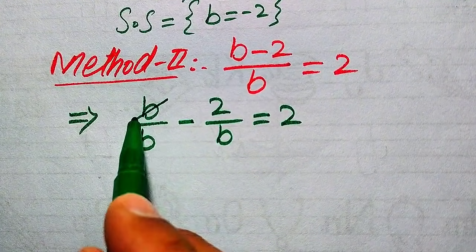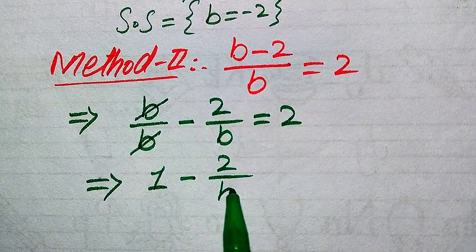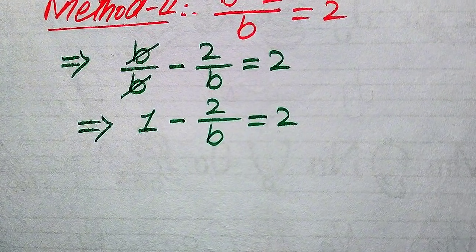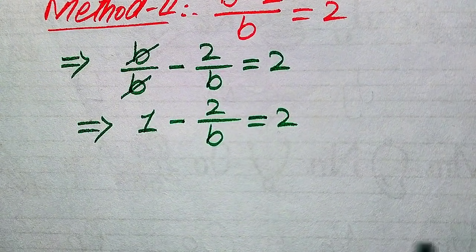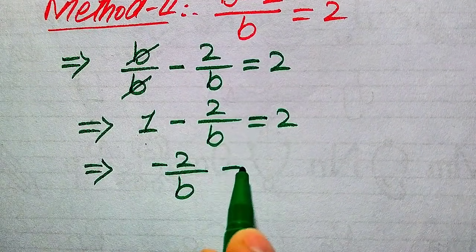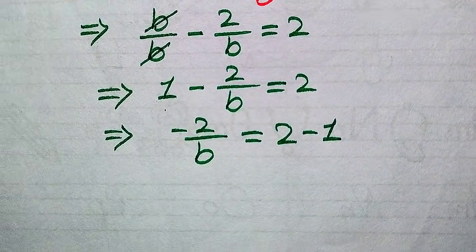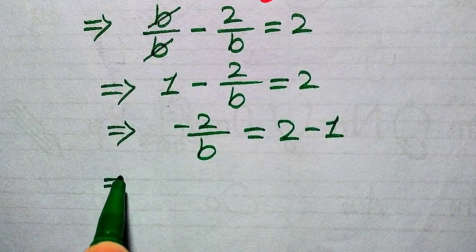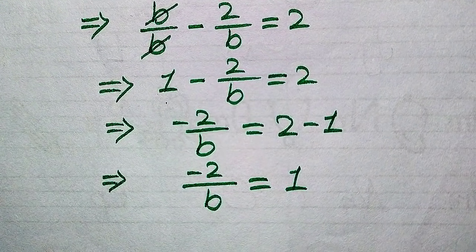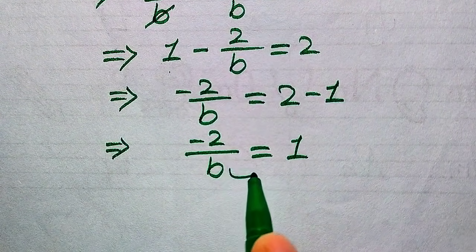Now you see that b over b cancels to 1, and we get 1 minus 2 divided by b equals 2. Our target is to get the values of b, so we move the positive 1 to the right hand side, where it becomes negative. We obtain minus 2 divided by b equals 2 minus 1, which equals 1.